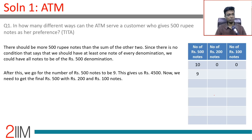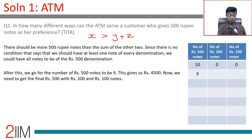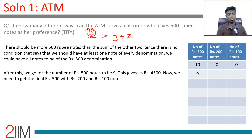Question 1: In how many different ways can the ATM serve a customer who gives 500 rupee notes as their preference? The number of 500 rupee notes must exceed the sum of the other two. Note: the customer does not need at least one note of each type, so all 10 notes being 500 rupee notes is valid — that's one possibility.